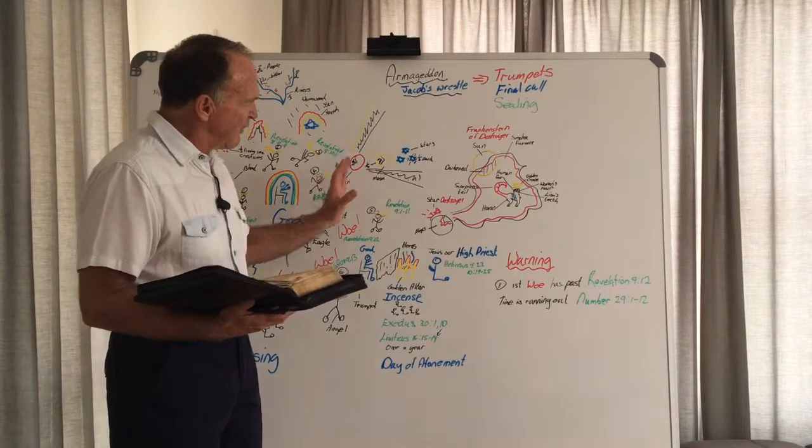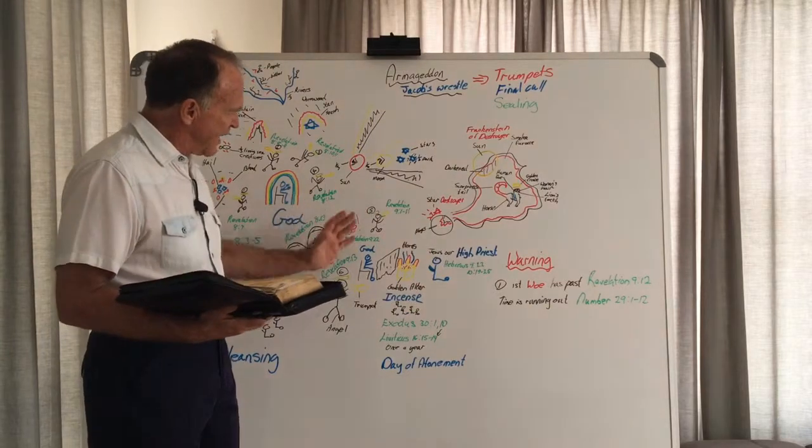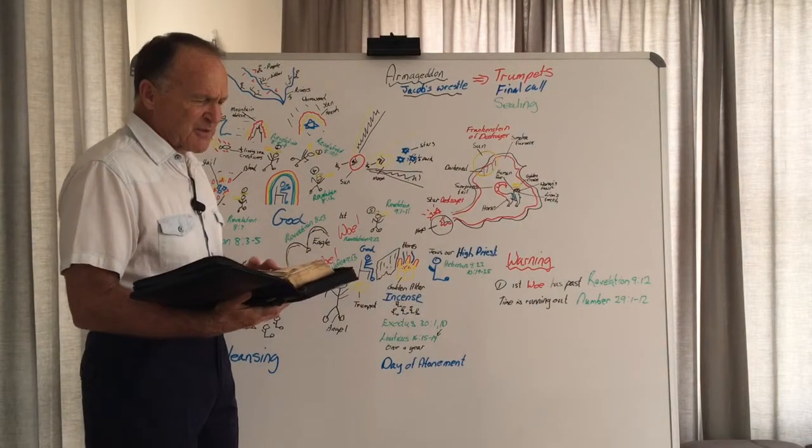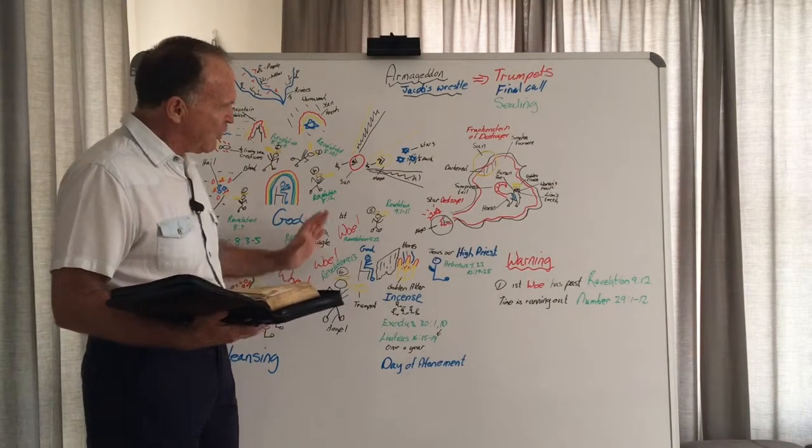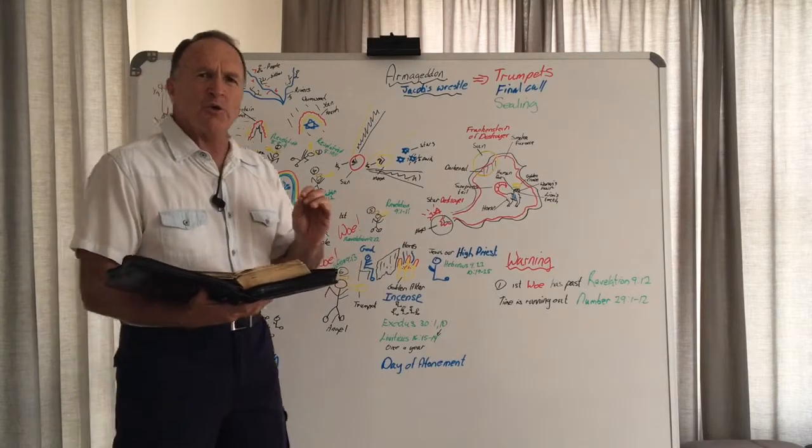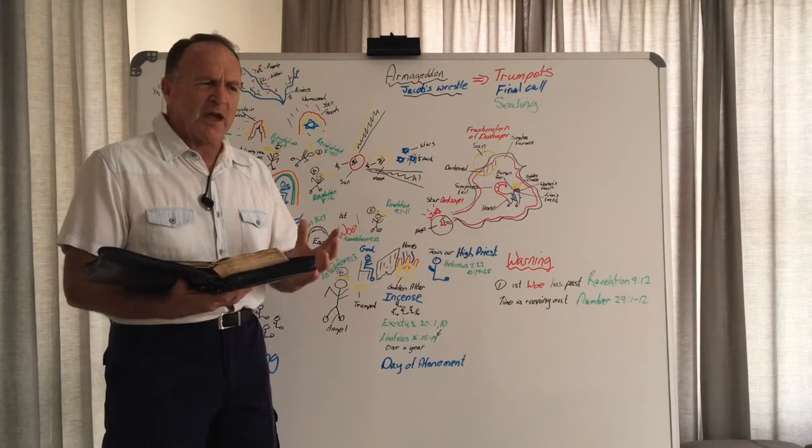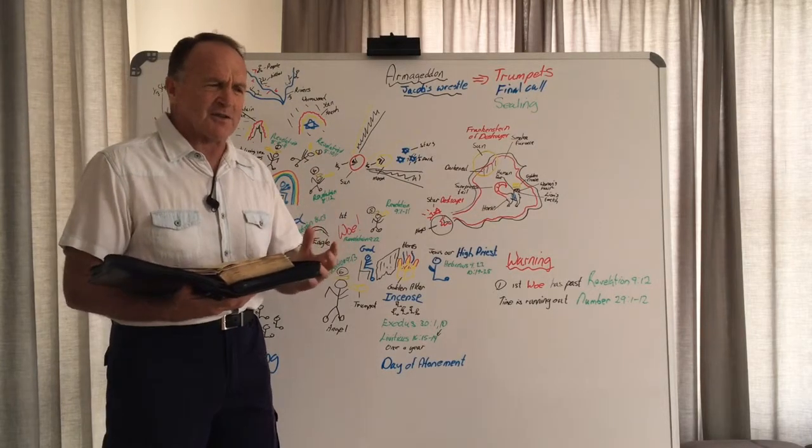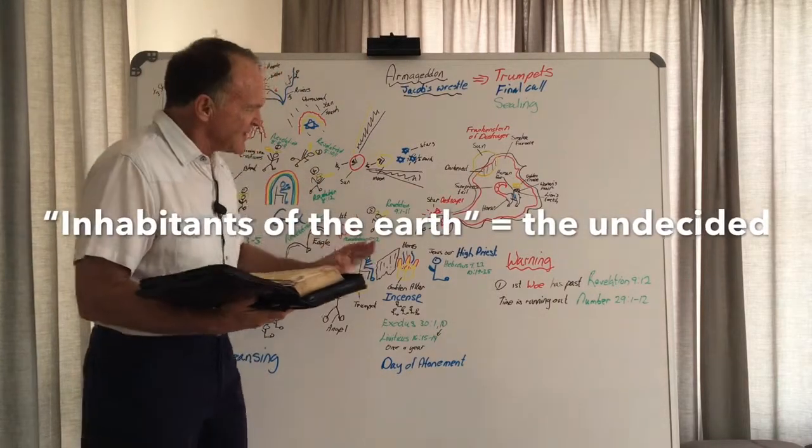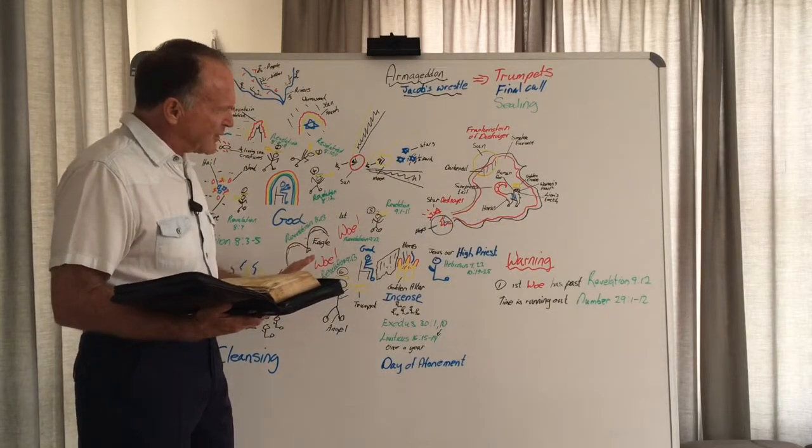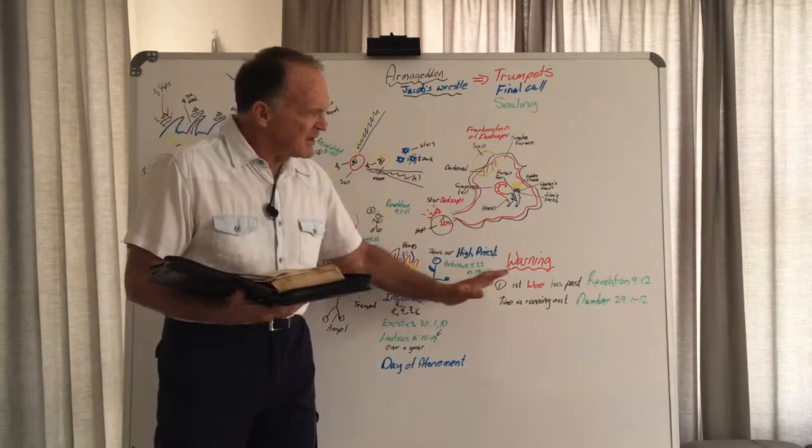Between the blowing of the fifth trumpet and the sixth trumpet, our attention is drawn back to Revelation chapter 8 verse 13, where an eagle was flying in the air crying out, woe, woe, woe to the inhabitants of the earth. The phrase inhabitants of the earth reveals those people who have not yet made their choice for Christ. So our attention is brought back to this and there seems to be a warning that time is running out.